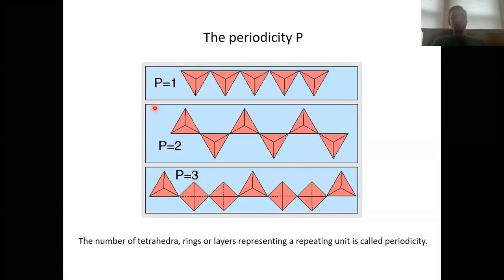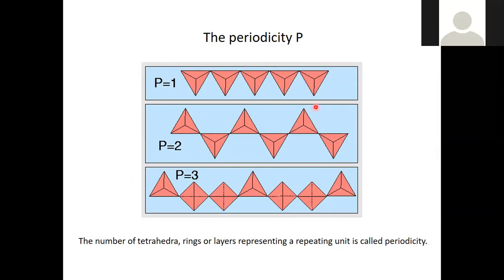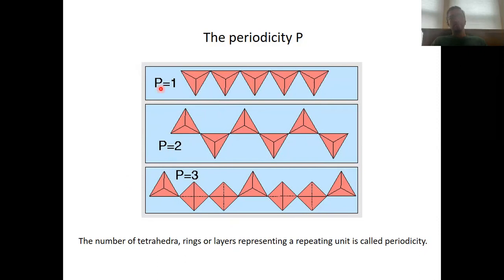The periodicity counts the number of tetrahedra, rings, or layers that represent a repeating unit. This is illustrated here for the example of chains. You can see three different chains, and the periodicity in these chains varies from one to two to three. In the first chain, the periodicity is one, because one repeating unit contains only one tetrahedron. In other words, when we translate one tetrahedron along the chain, the next tetrahedron superimposes the first tetrahedron.